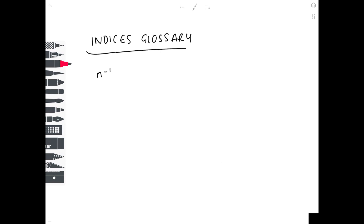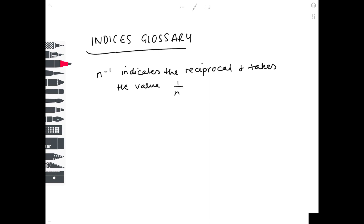Some more notation: n to the minus 1 indicates the reciprocal of n — the upside-down version of n — which takes the value 1/n. For example, 7 to the minus 1 equals 1/7. Negative powers indicate reciprocals.